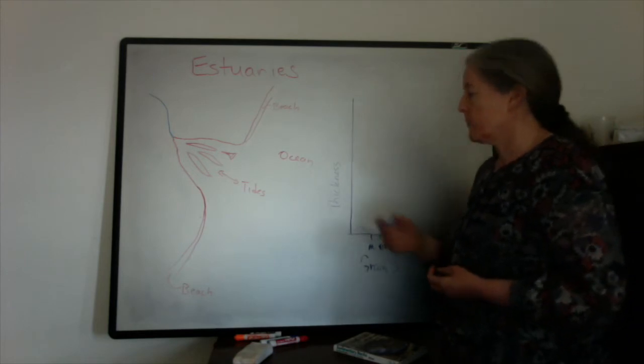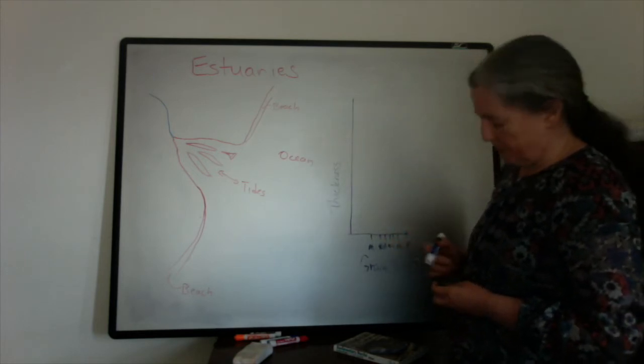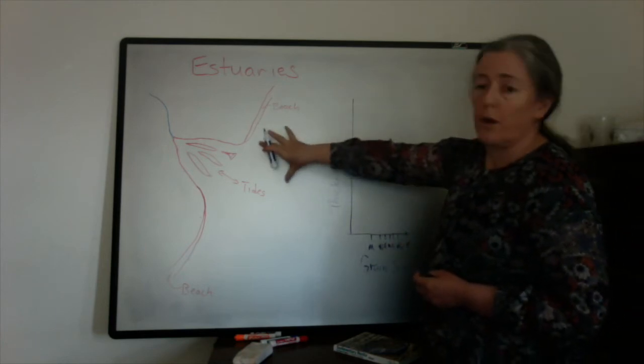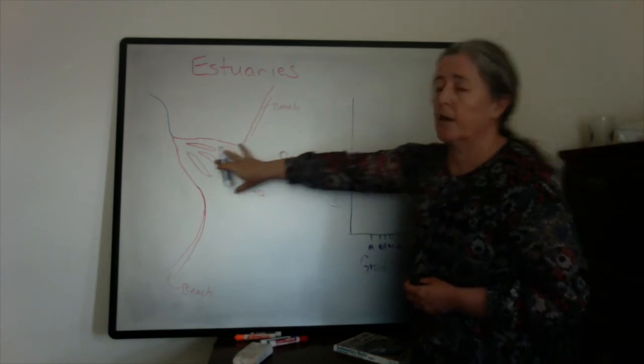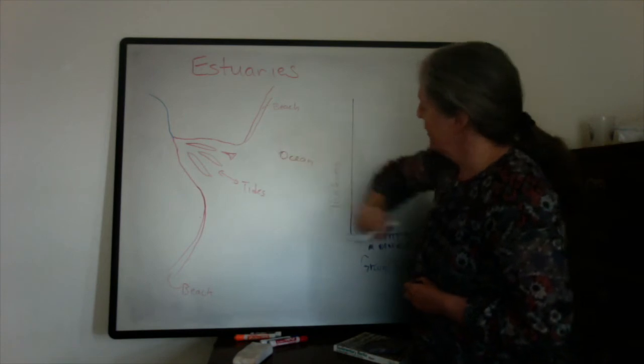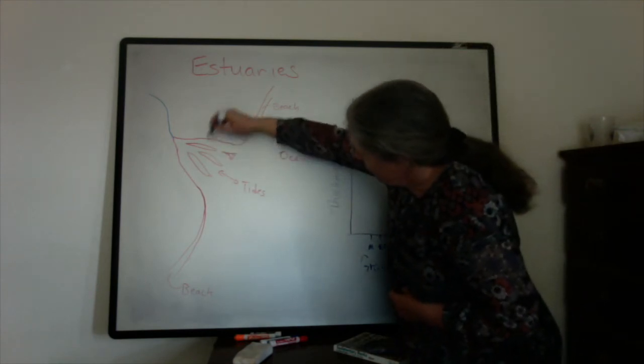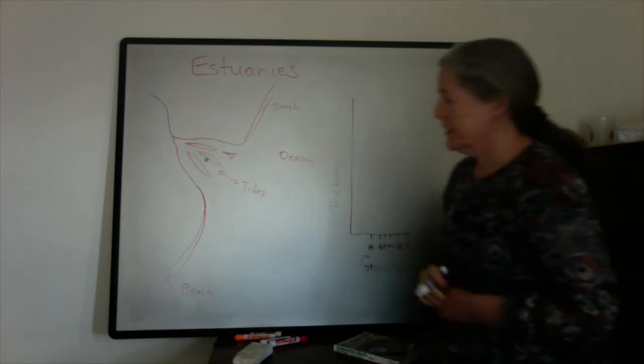If you were going to draw a stratigraphic column through time using Walther's Law, the ocean water is going up. I've mentioned that this is a flooded river valley. So if we took a point right here...